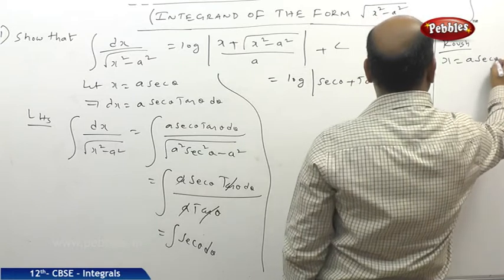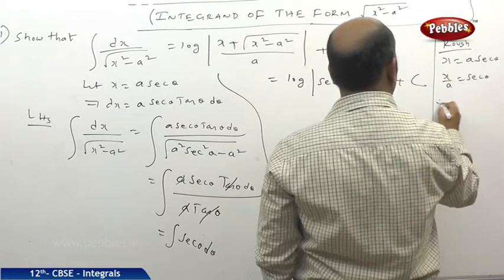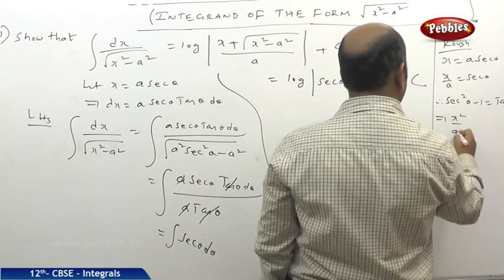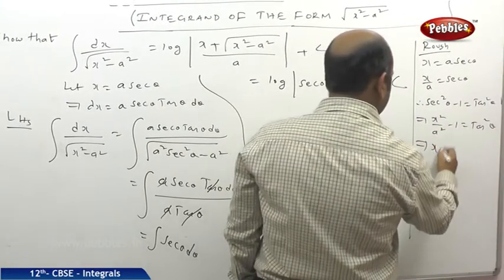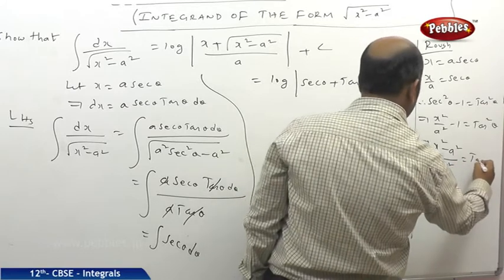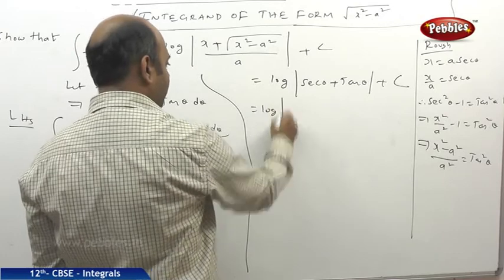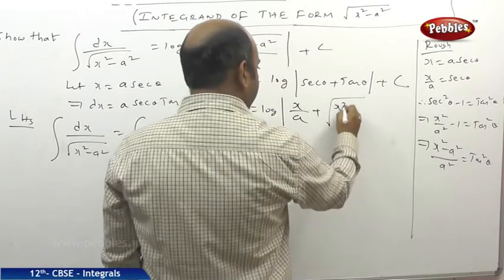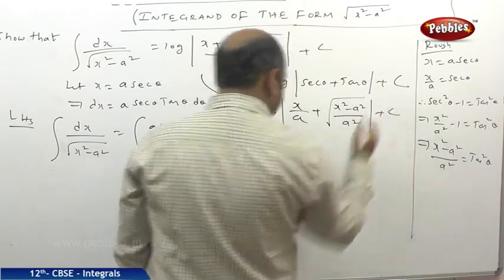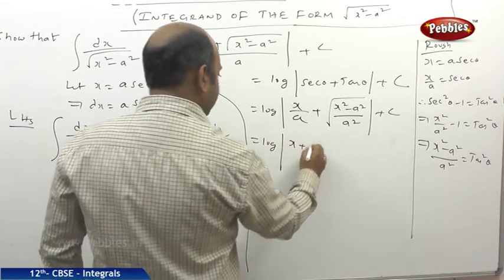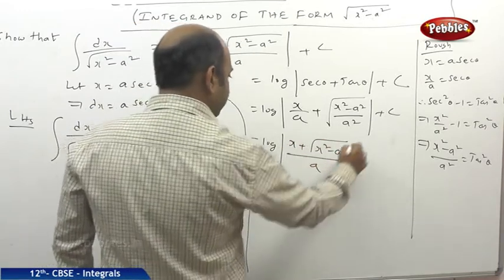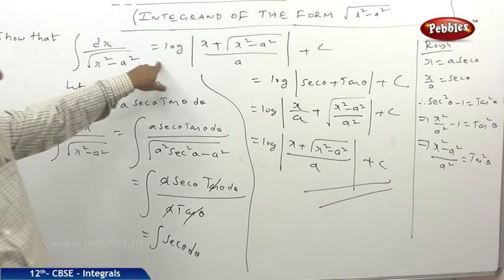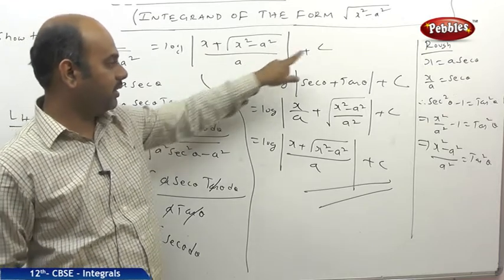Converting back: x equals a sec θ, so x/a equals sec θ. Then sec²θ minus 1 equals tan²θ, so x²/a² minus 1 equals tan²θ, giving tan θ equals under root of (x² minus a²)/a. Substituting: log mod (x/a plus under root of (x² minus a²)/a) plus c, which simplifies to log mod (x plus under root of (x² minus a²)) divided by a, plus c. So the integral of dx by under root of (x² minus a²) equals log mod (x plus under root of (x² minus a²)) divided by a, plus c.